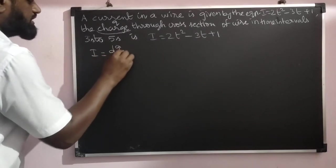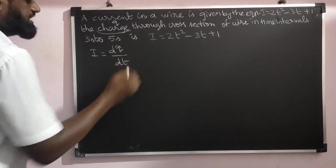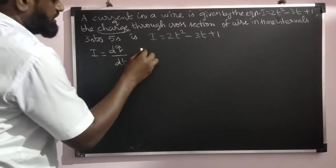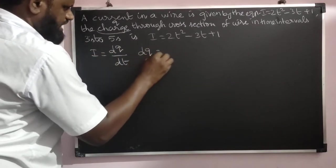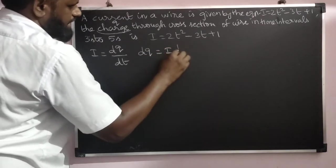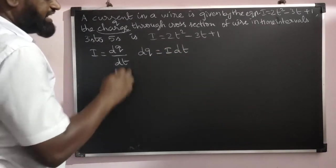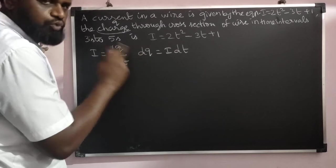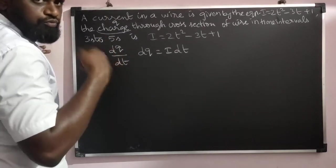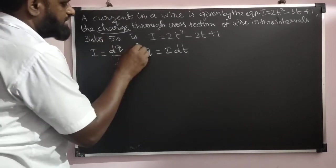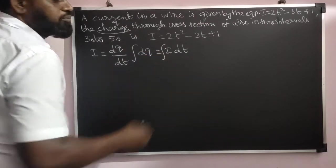We know the very basic formula of current: i = dq/dt. From this equation, dq = i dt. To find q, we need to take the integration on both sides.